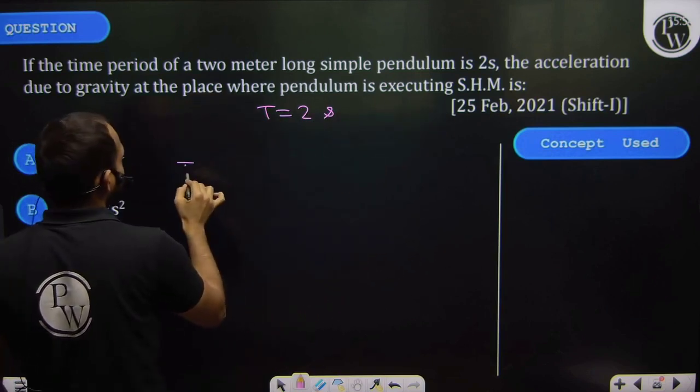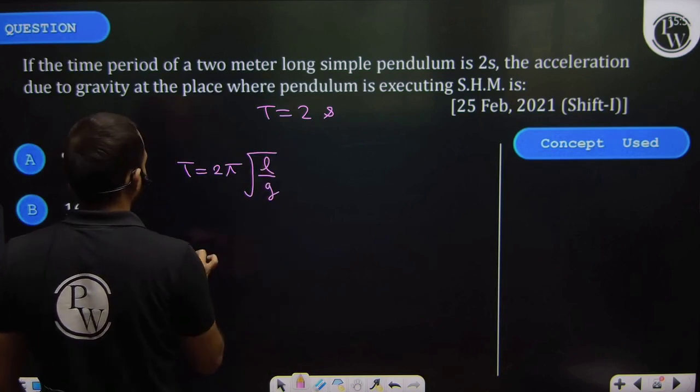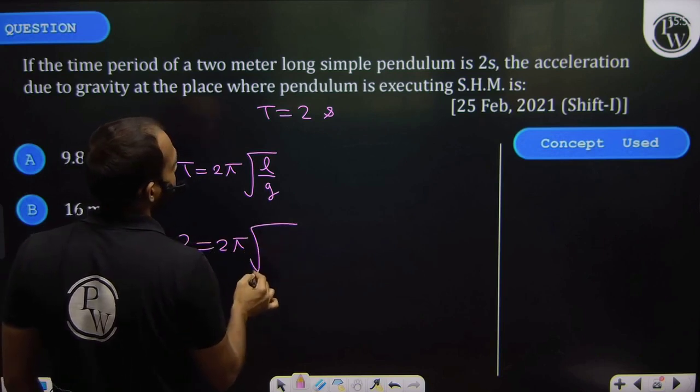So in SHM, the time period will come as T equals 2π under the root of L by G. Time period given is two, so this is equal to 2π under the root of L.